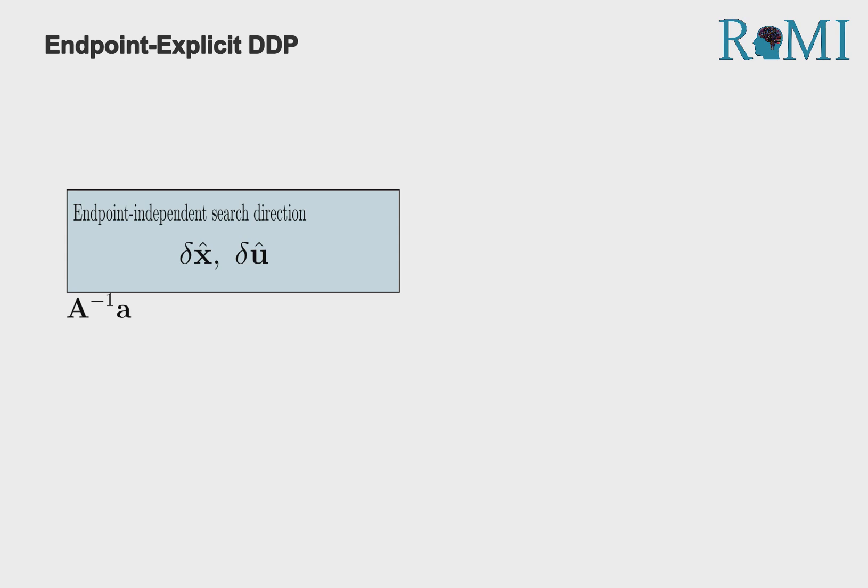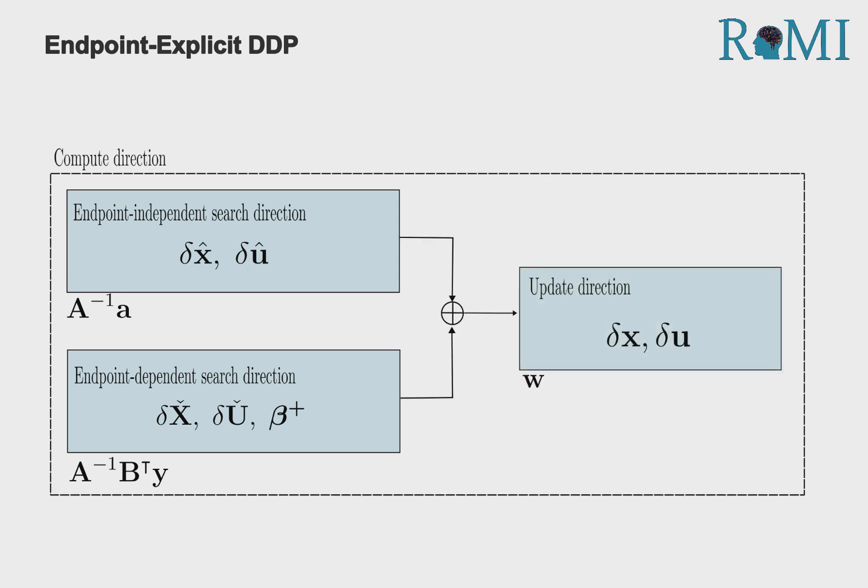Following this, our algorithm runs another Riccati recursion for computing the endpoint dependent search direction. This step reuses the factorization computed in the first Riccati recursion. Finally, it calculates the endpoint multiplier necessary for determining the total search direction.